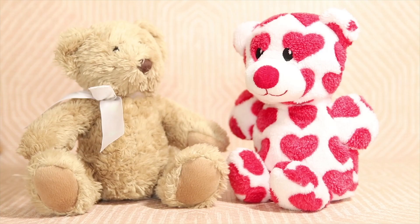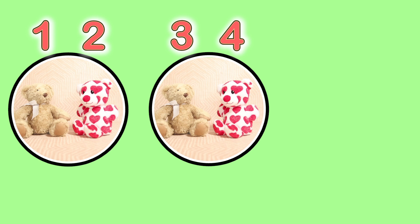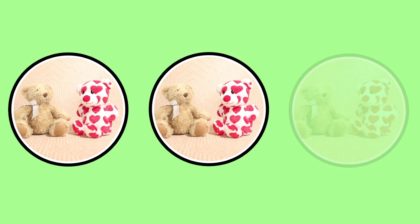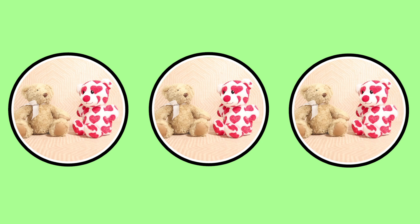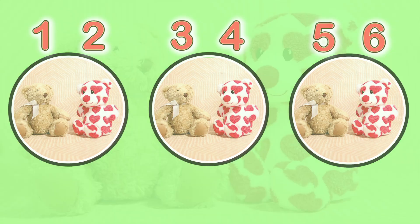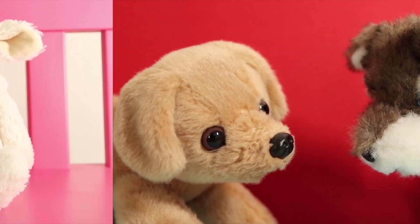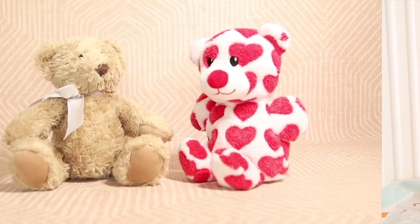What does it mean? If we have one lot of two teddies, we have two teddies. If we have two lots of two teddies, we have one, two, three, four — four teddies. If we have three lots of two teddies, we have one, two, three, four, five, six — six teddies.